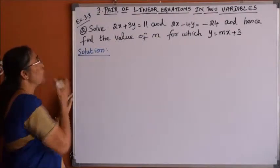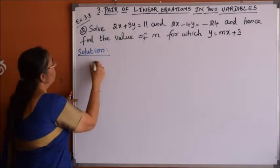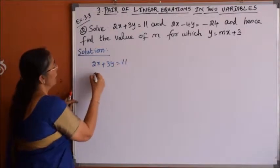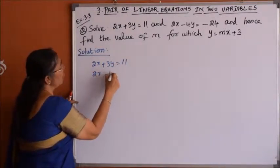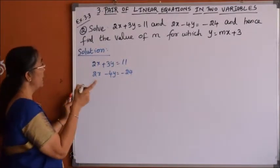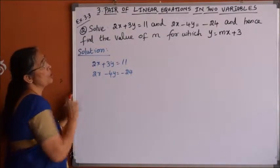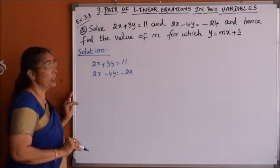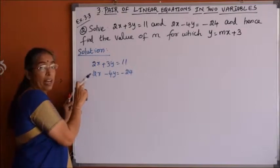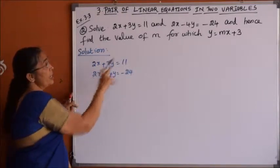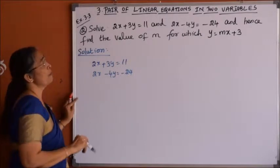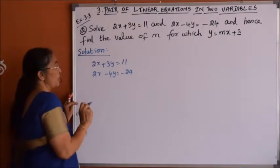Problem number 2: solve 2x plus 3y equals 11 and 2x minus 4y equals minus 24, and hence find a value of m for which y equals mx plus 3. We should solve these two equations, and from the values of x and y we get, we substitute them to find the value of m for the equation y equals mx plus 3.